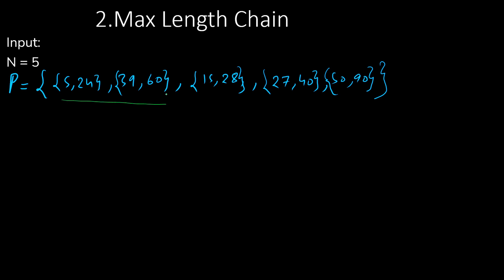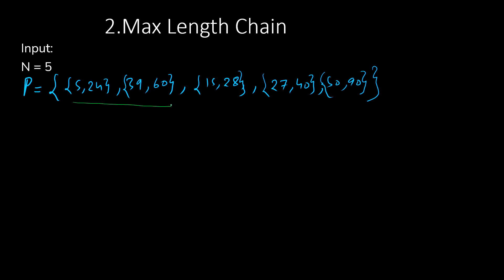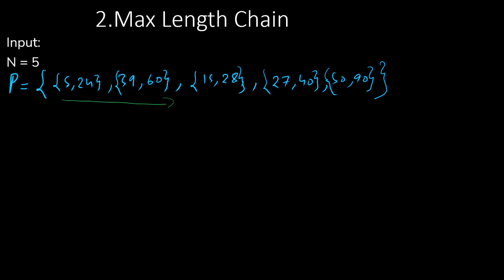We have to find out how many elements are possible that can be arranged in increasing order. Here we have the example P equals 5, 24, 39, 60, 15, 28, 27, 40, which are given in pairs. These pairs are given as objects in the question, so we will treat this as object values.